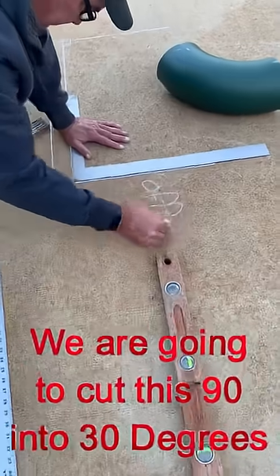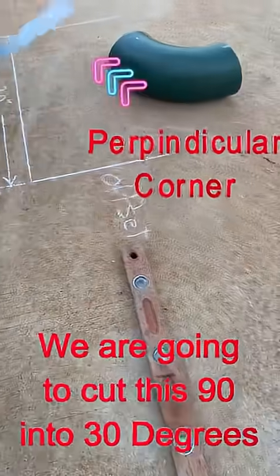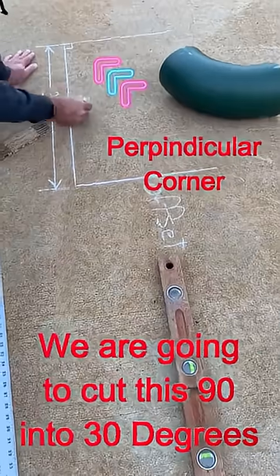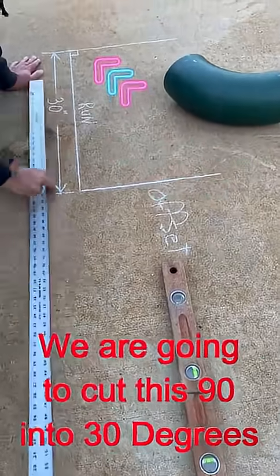As you can see here, I'm creating a perpendicular corner and I'm going to create a 30 degree triangle and I drew a 30 inch run.